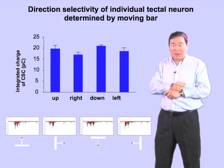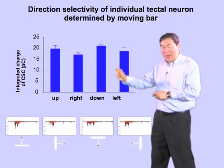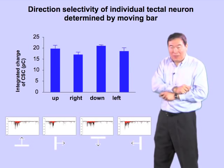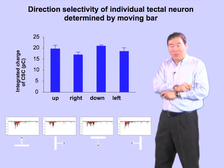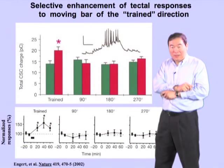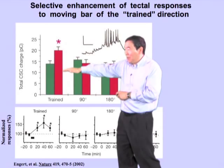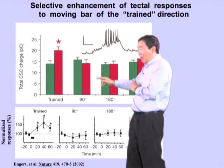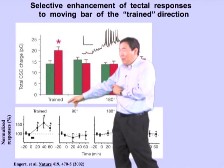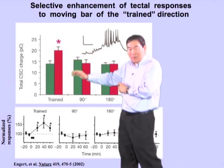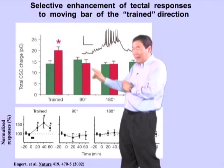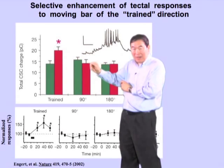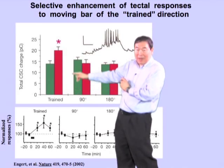So now the experiment is very simple. If we train the tadpole by repeatedly giving the moving bar in one direction — like playing music in one direction constantly for a long time — what would happen to the response of the cell? Before exposing the tadpole to a unidirectional moving bar, the response is more or less equal to all directions. Now we train with a moving bar in one direction, repetitively, for 40 times, and then test their response to four different directions. We found that the trained direction now gives a much larger response — more firing, more spikes.